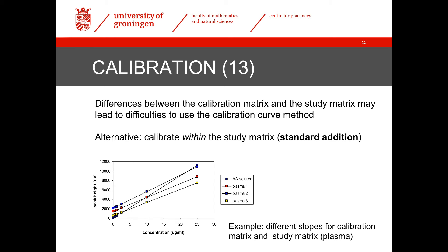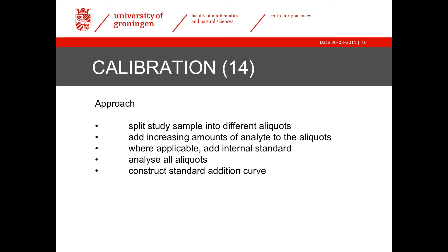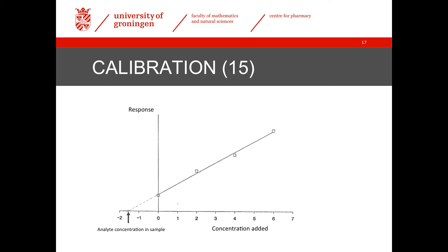Here is an example of such a situation. For an endogenous analyte, we had to use an amino acid solution as the proxy matrix, and the slope of the calibration curve in this proxy matrix was quite different from the slopes in plasma. Therefore, we would get incorrect results if we had used this calibration curve for the calculation of plasma concentrations. The solution is to generate a calibration curve in each individual sample by splitting each study sample into different subsamples and preparing calibrators using these different aliquots. In this way, we reconstruct a calibration curve that already contains the analyte when no extra amount is added. The intercept of this curve, therefore, is not equal to zero, and the analyte concentration can be determined from the point where the curve intersects the x-axis.